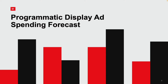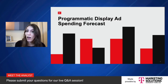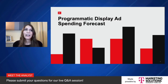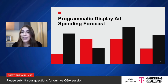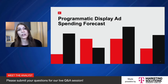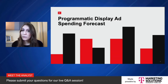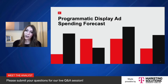Our definition of programmatic digital display advertising is quite broad — it encompasses really any digital advertising that is automated in some capacity. So video and static formats across the ecosystem, native ads, ads on social networks like Facebook and Twitter, digital out of home. If automation plays a role in serving the ad, that spend is included in our estimates.